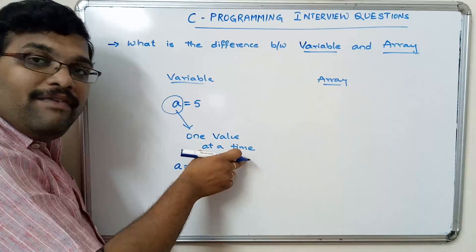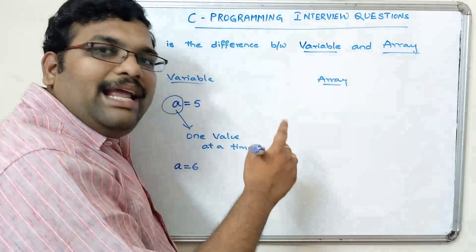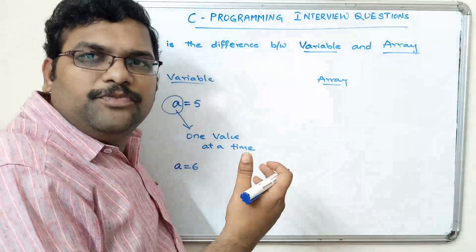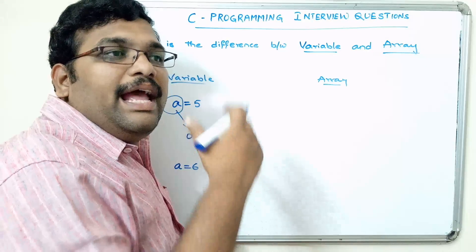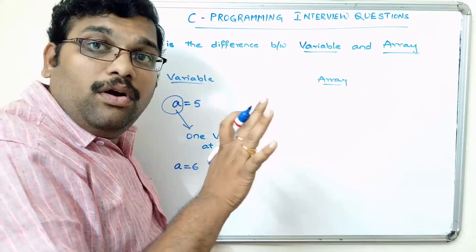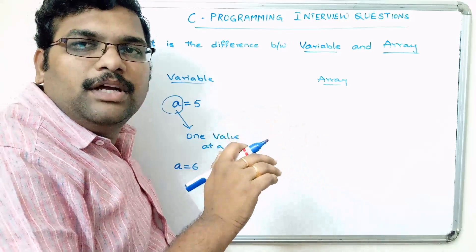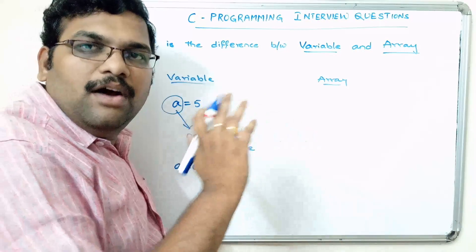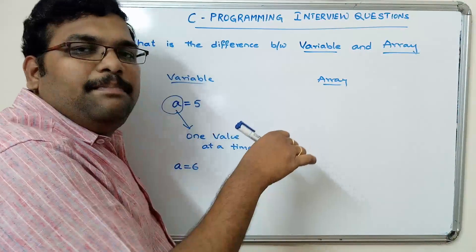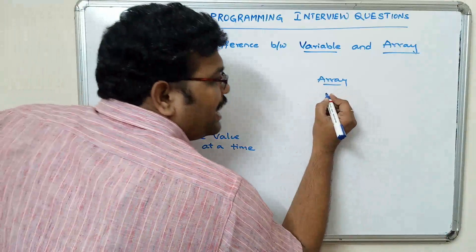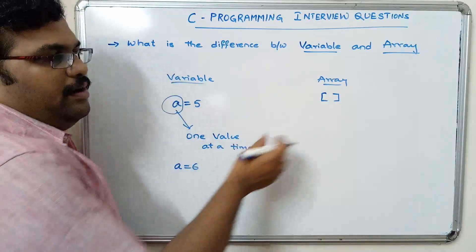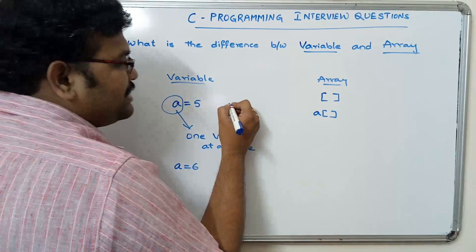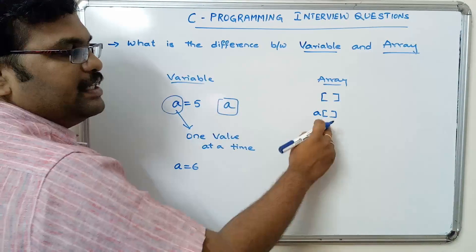A variable can hold only one value at a time. Coming to array — an array can hold multiple elements of similar data type. There are different data types: integer, character, float. Array is similar to a variable but it can hold multiple values of the same data type. The array is represented using a subscript — 'a[1]' is an array, simply 'a' is a variable.